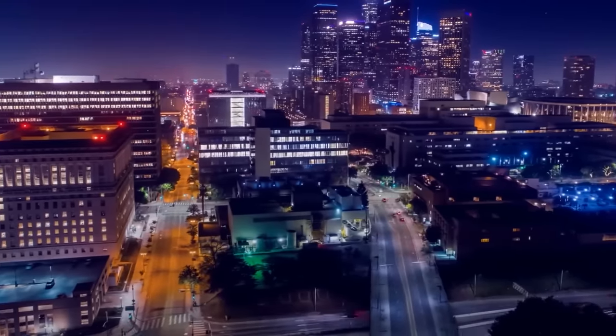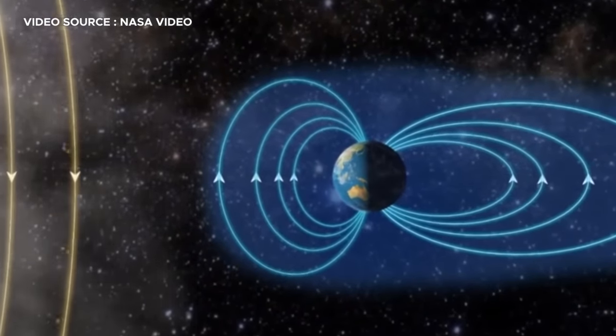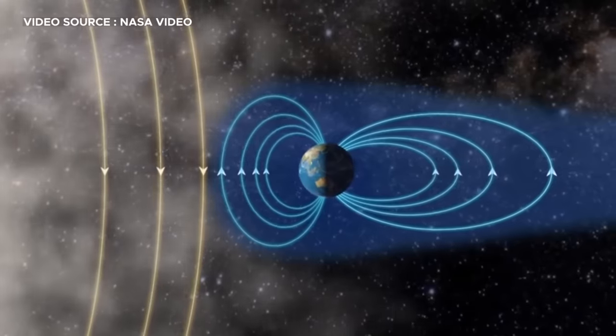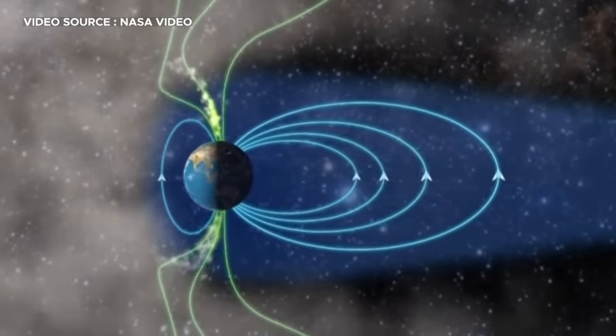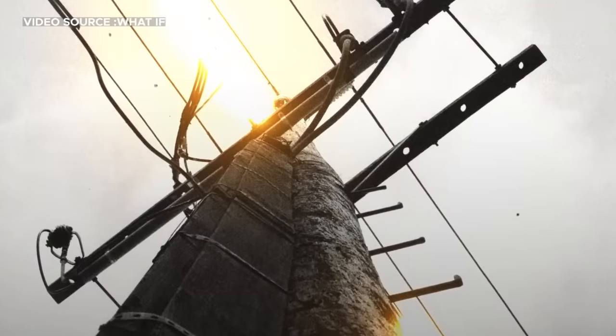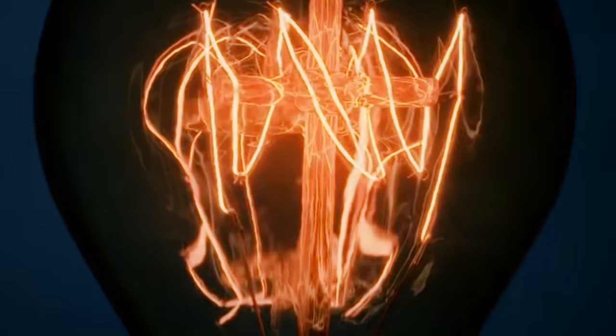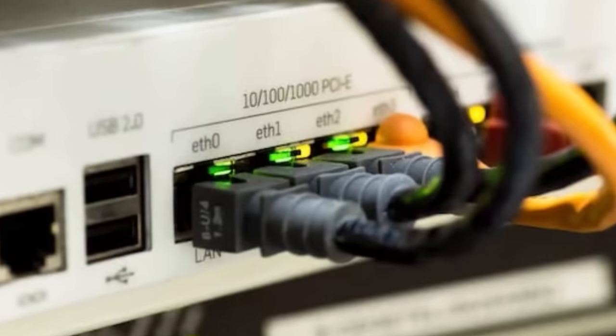The potential disruptions extend to Earth-bound systems as well, particularly electrical grids. The Earth's magnetic field serves as a shield against solar storms, which are bursts of solar wind carrying charged particles toward Earth. Normally, these particles are deflected, but a weakened magnetic field could allow more of them to reach the Earth's atmosphere, potentially leading to disturbances in electrical systems and power grids. Indeed, when these charged particles interact with the Earth's atmosphere, they have the potential to induce strong electrical currents in power lines. This phenomenon could lead to the overloading of electrical grids, causing widespread blackouts. The consequences would be far-reaching, affecting essential services ranging from lighting and heating to internet connectivity and water supply.